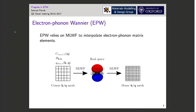EPW is an electron-phonon Wannier code. The main idea is you have some physical properties like the Hamiltonian or the electron-phonon matrix elements, you compute that on a coarse k and q point mesh, then use maximally localized Wannier functions to interpolate into real space, and then you can interpolate back onto a much denser k and q point grid.